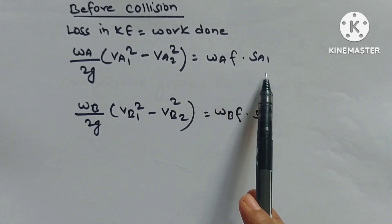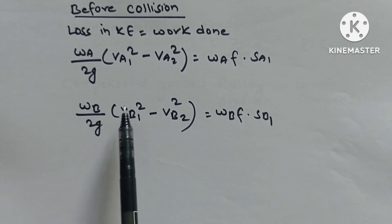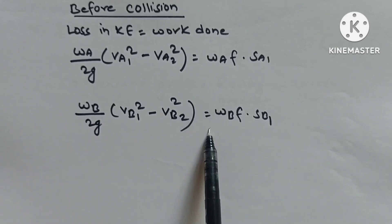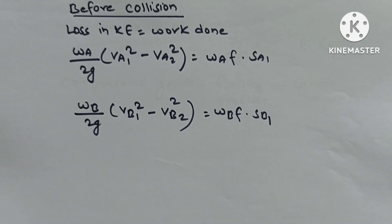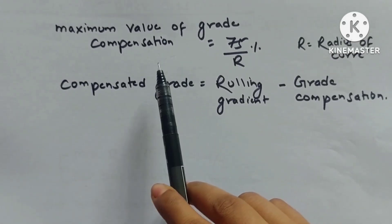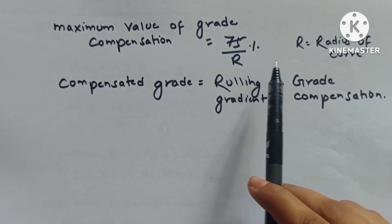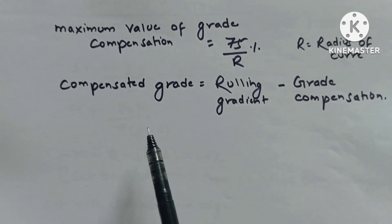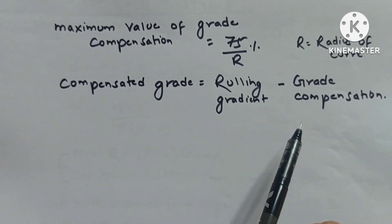Before collision, loss in kinetic energy = (Wa/2g)(Va1² − Va2²) = Wb·f·Sb1. Grade compensation = 75/R percent, where R is radius of curve. Compensated grade = ruling gradient − grade compensation.